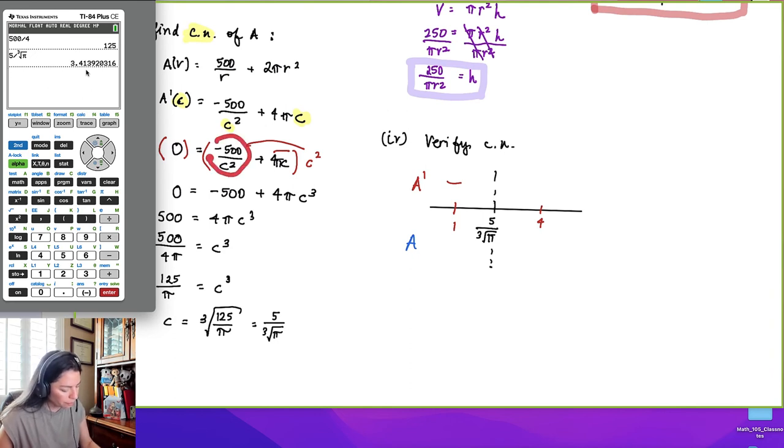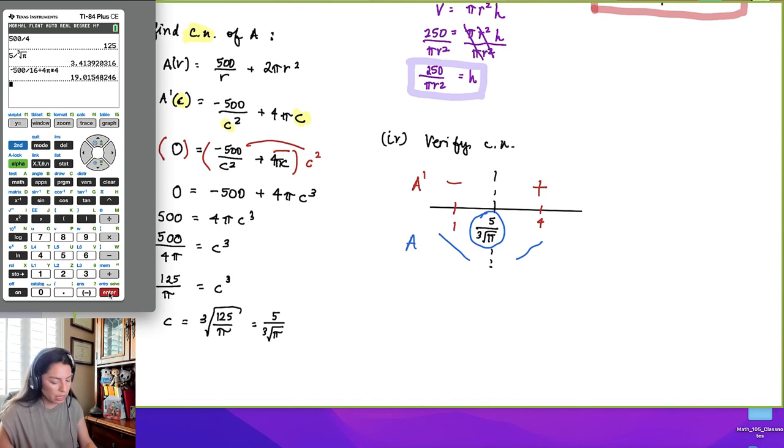If I put in 4 here, so I have negative 500 over 16, and we can put this in the calculator - negative 500 over 16, and then add 4π times 4 - we'll see that that ends up being positive. Which means to our original function, it's decreasing to increasing around this critical number, 5 over cube root of π. And in fact, this critical number makes the surface area of the cylinder a minimum. We have to verify because we just can't assume.